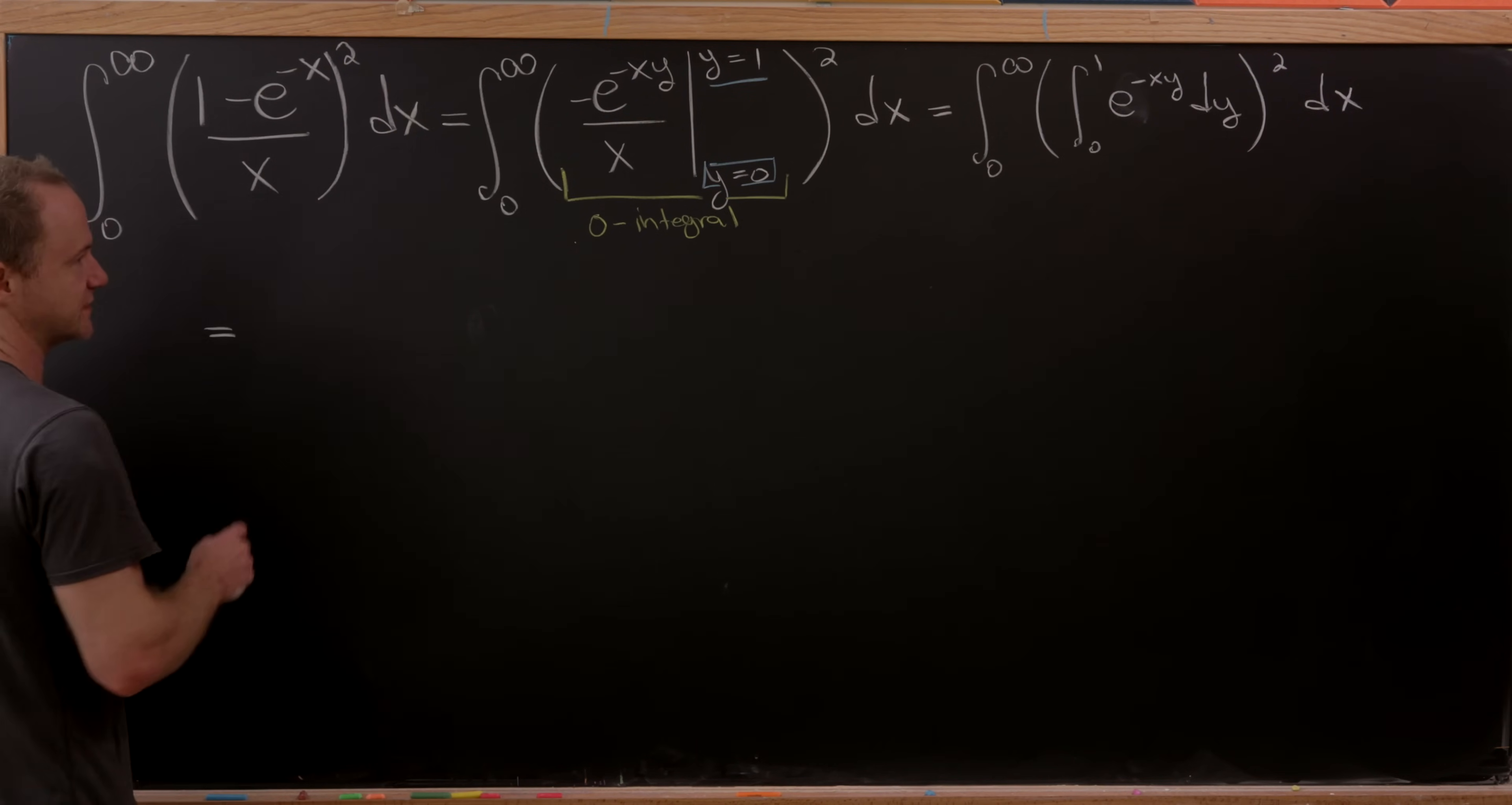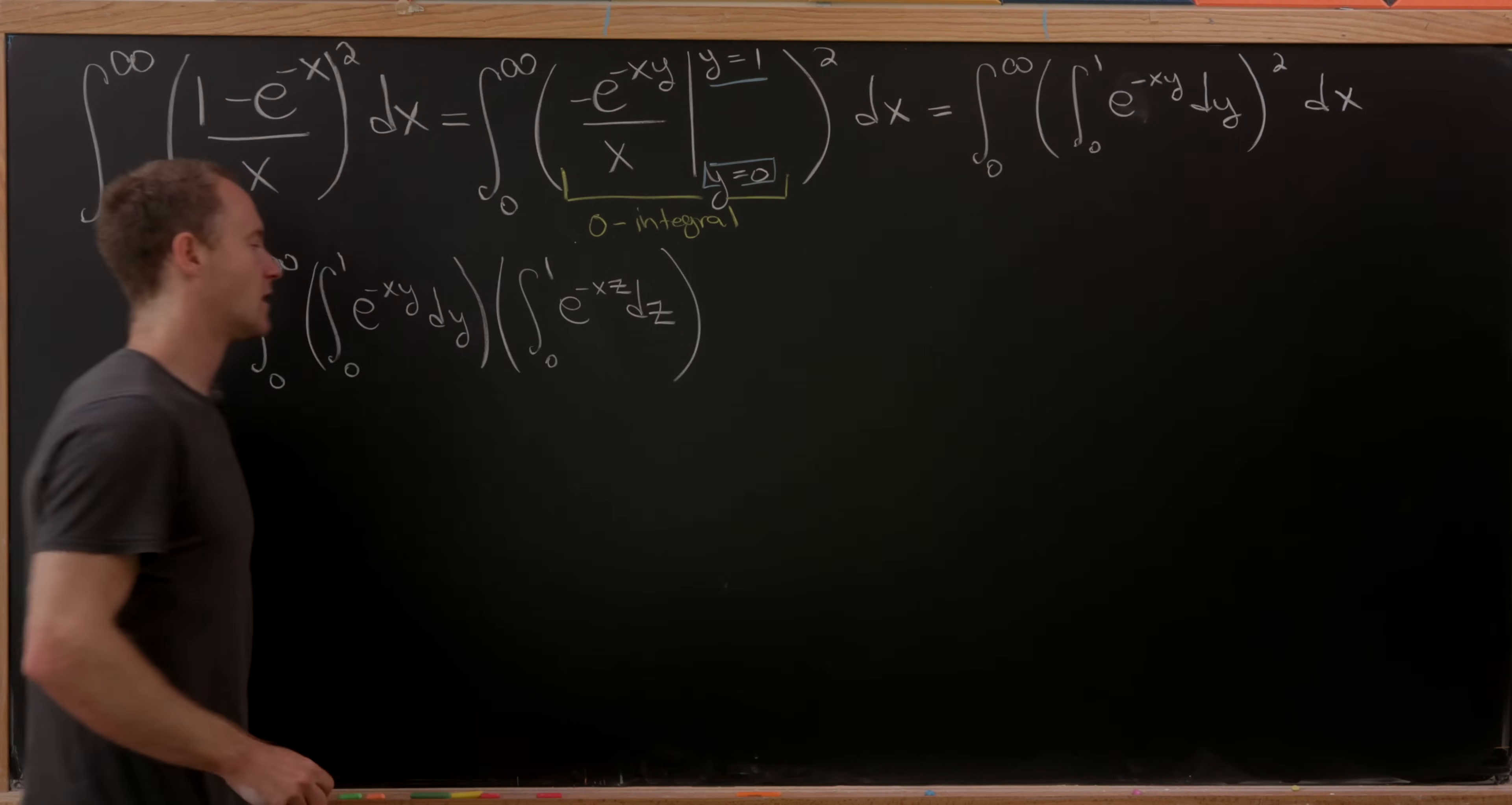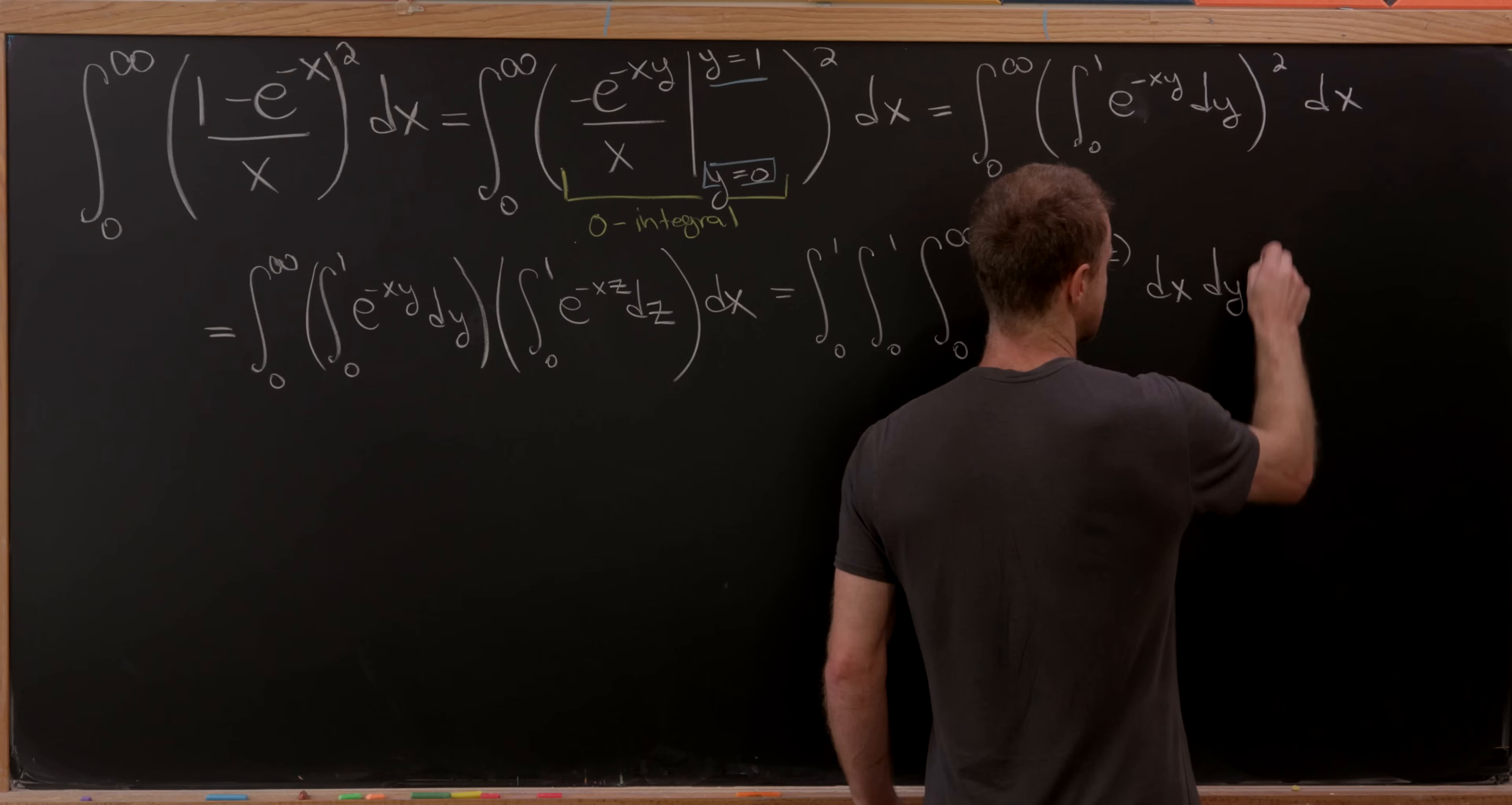And then I'll exchange variables in one of them. So to write this down, we've got the integral from 0 to infinity of the integral from 0 to 1 of e^(-xy) dy, and then we'll multiply that with the integral from 0 to 1 of another copy of this, but I'll exchange the dummy variable y for z. So that'll be e^(-xz) dz. And then that's all within this x integral. So next up, I'll group all of the terms together and I'll change the order of integration. And I'll make it look like this: the integral from 0 to 1, and then the integral from 0 to 1, and then finally the integral from 0 to infinity of e^(-x(y+z)) dx dy dz.